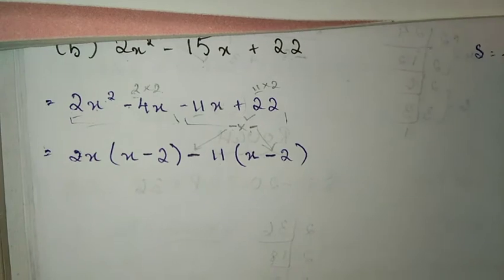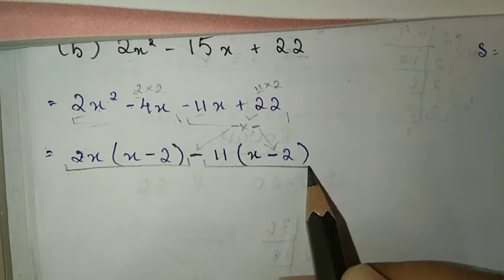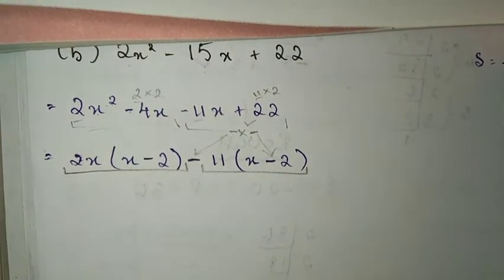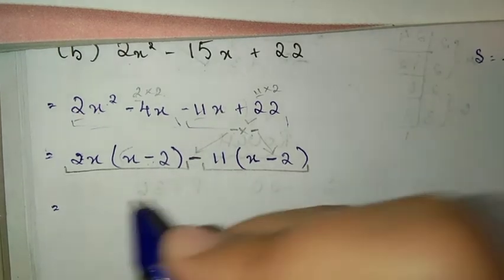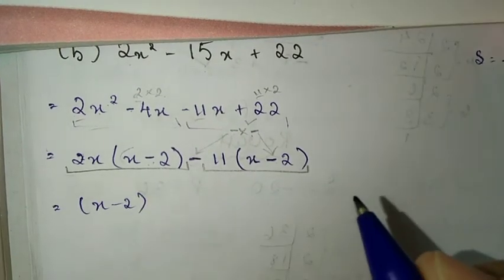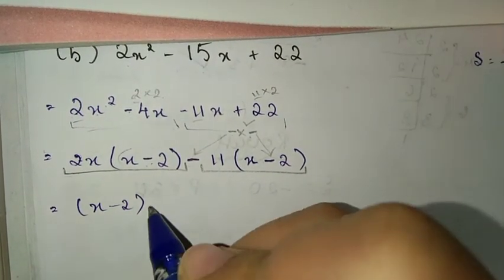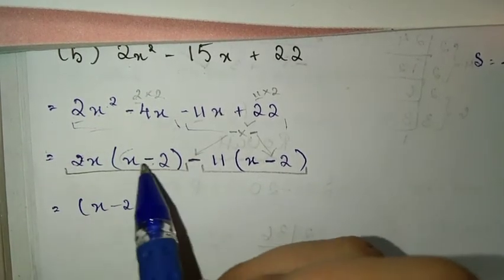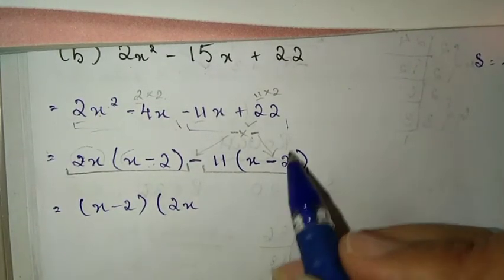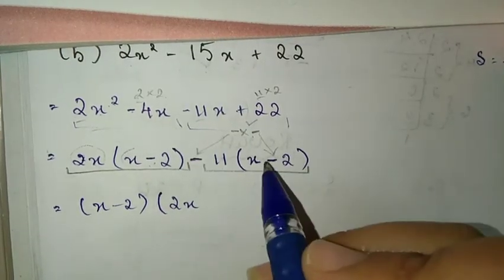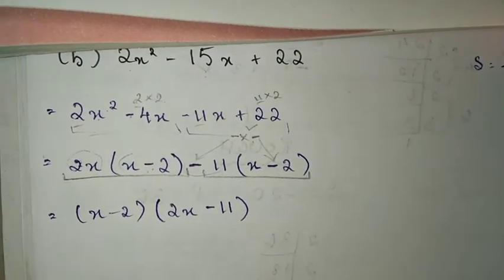So we have x minus 2. Now the first term and second term have common factors. The bracket is common: x minus 2. Open bracket, 2x is there, then x minus 2, so minus 11 is there. This will be the final answer.